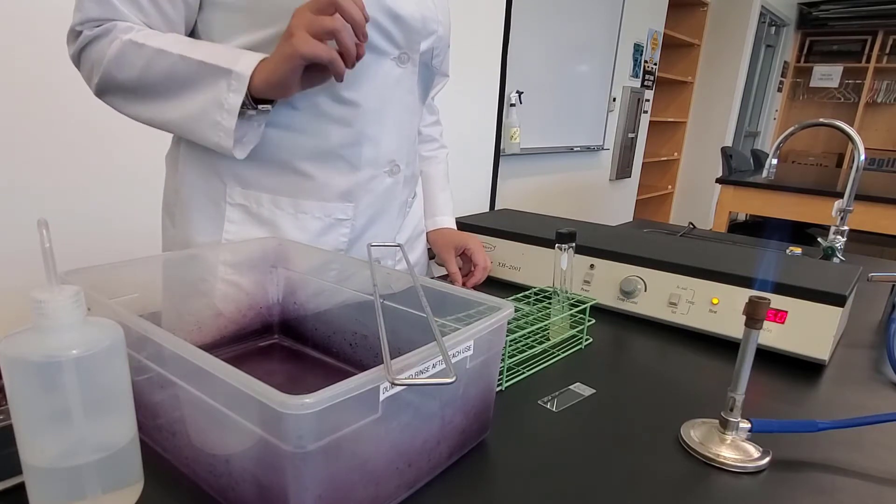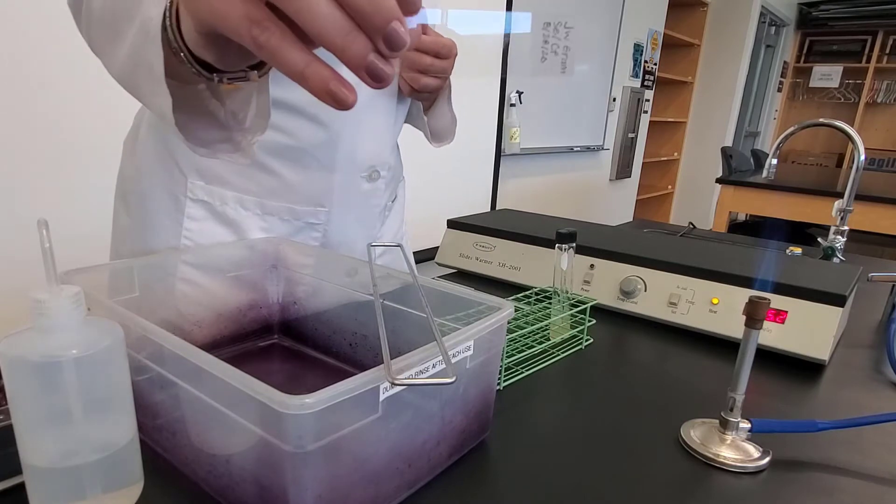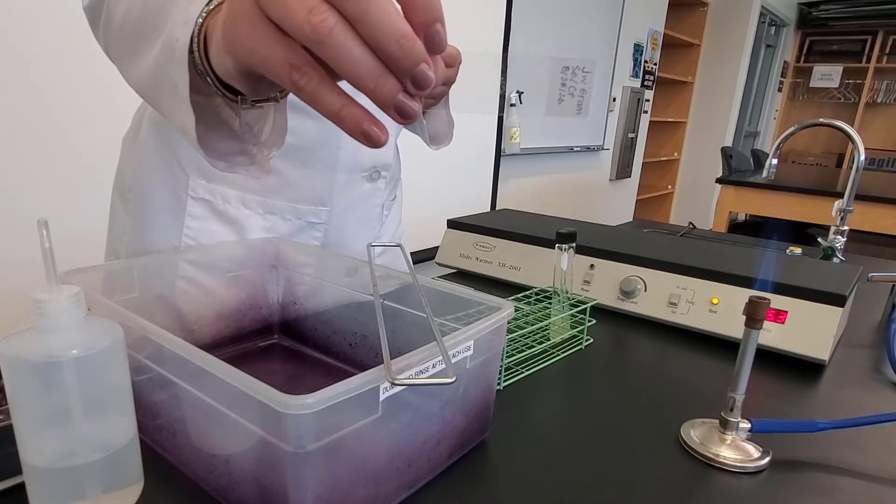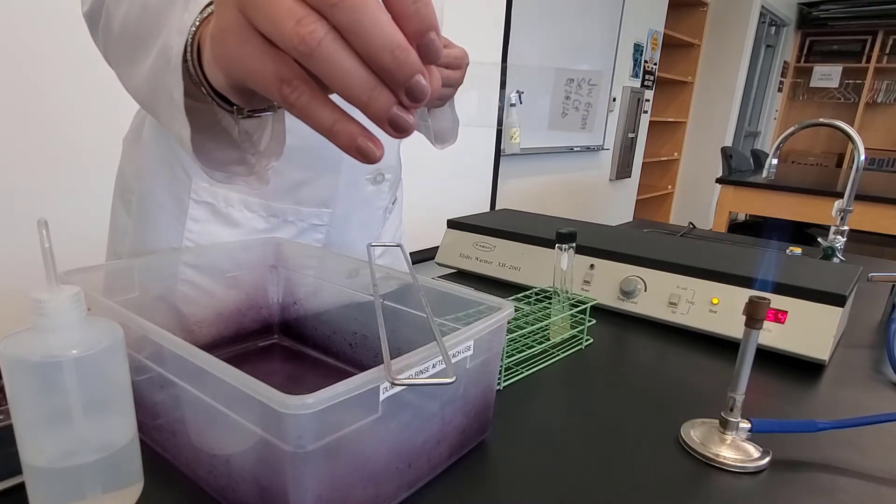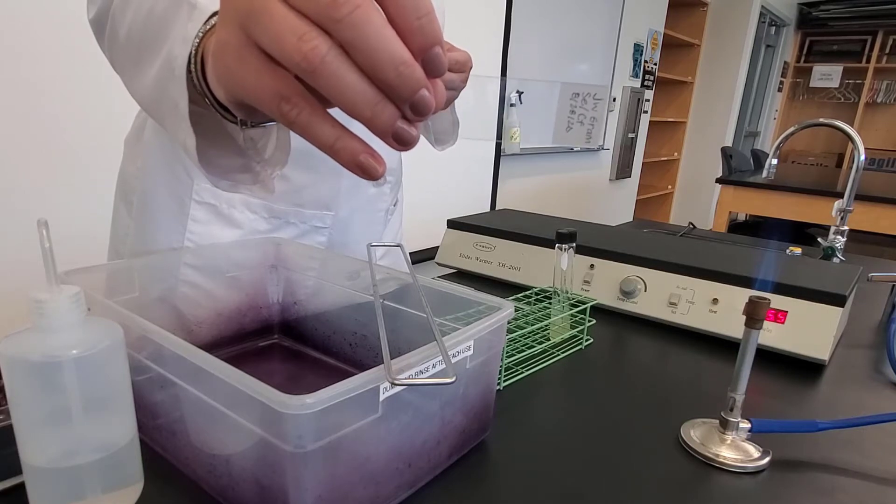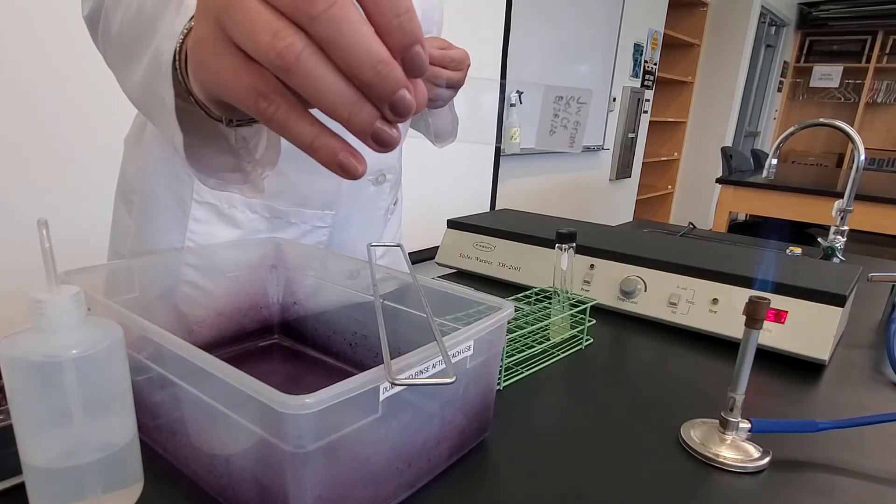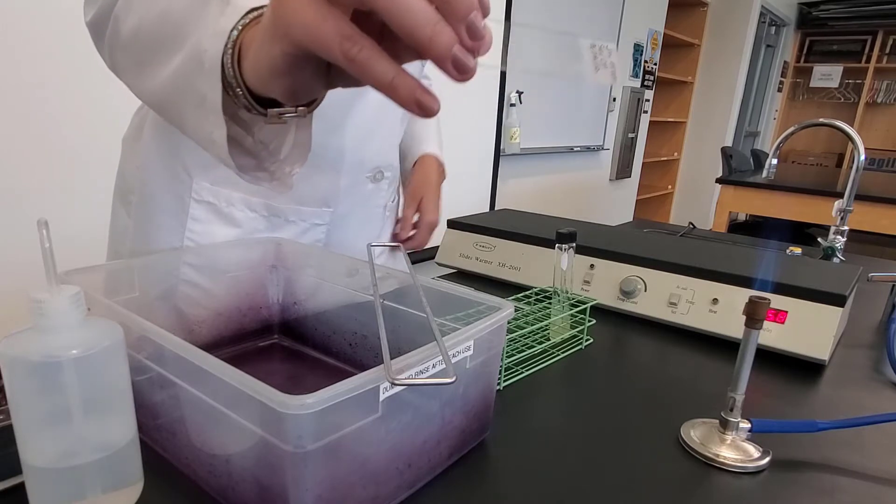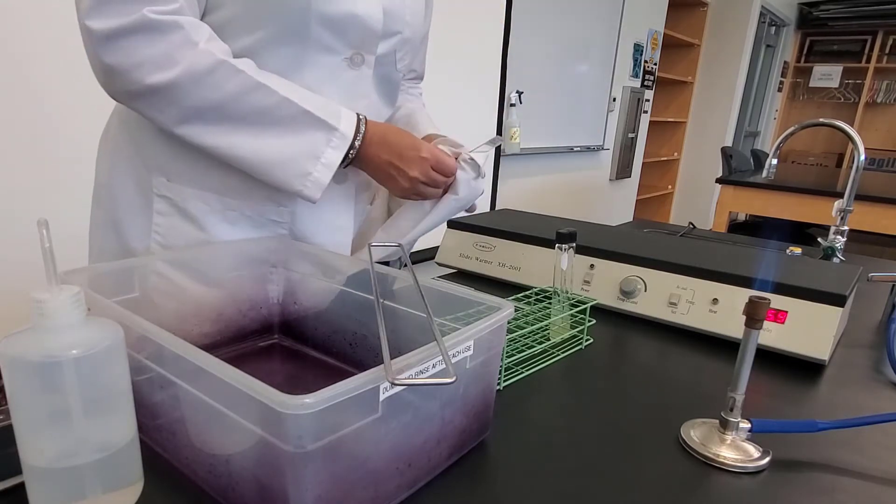To start, we're going to take a slide, and the slide is labeled with my initials, gram stain, S-E-C-F, those are the two organisms we will be using, and today's date. I'm going to just use my lab coat and wipe it clean.